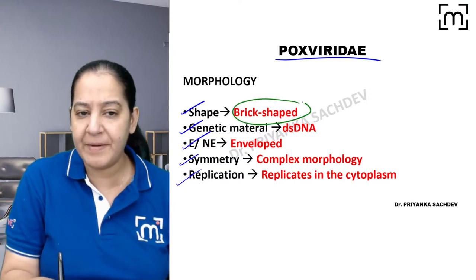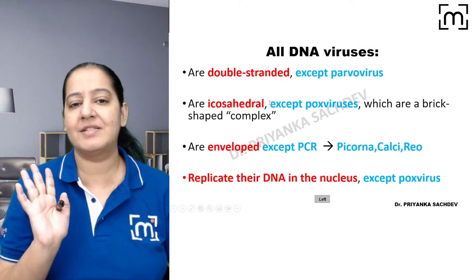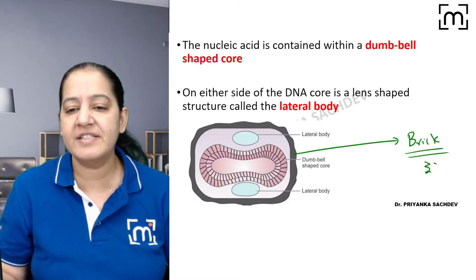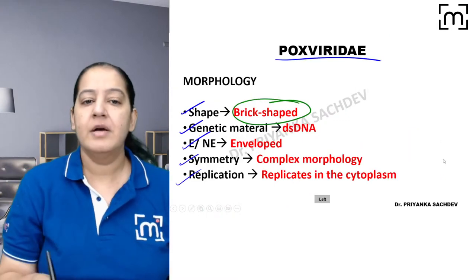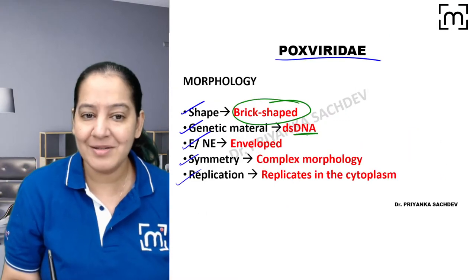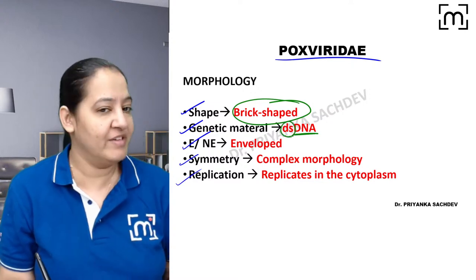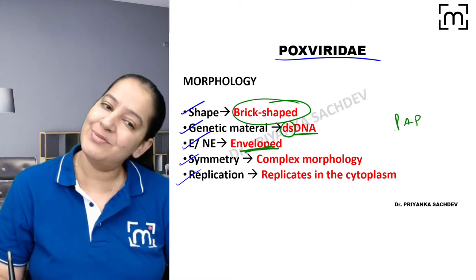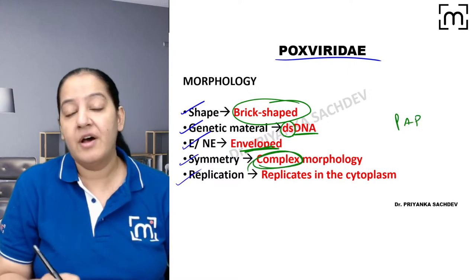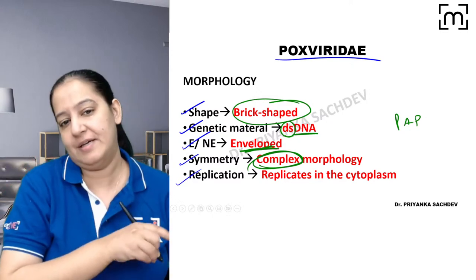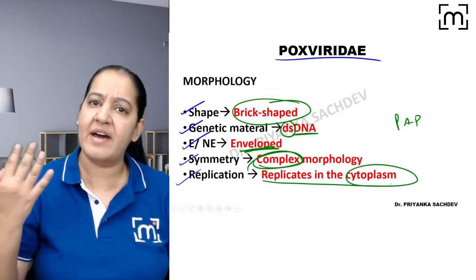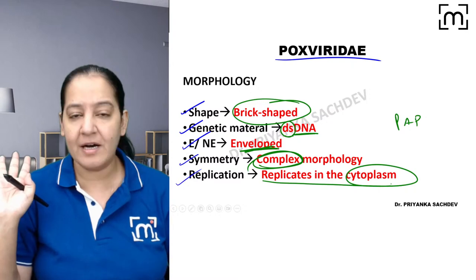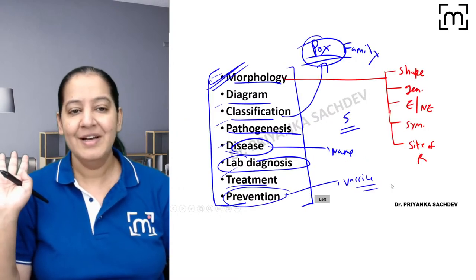This virus is brick-shaped — like a brick (eint). It is a DNA virus. All DNA viruses are double-stranded except Parvo, which is single-stranded, so Pox is double-stranded DNA. It is enveloped — the three non-enveloped ones (POP) don't include Pox. It has complex symmetry — all other DNA viruses are icosahedral, only Pox is complex. It replicates in the cytoplasm.